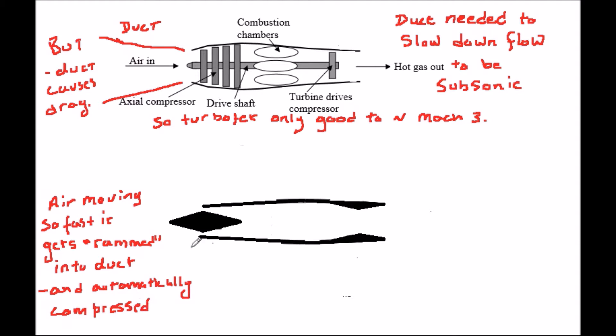Such an engine has no moving parts and is called a ramjet and is a successful engine which works in missiles and similar high speed systems.